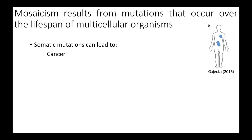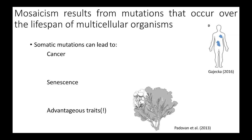We're most used to thinking about somatic mosaicism. Somatic mosaicism results from somatic mutations, which are mutations that occur in non-gamete producing cells. Somatic mutations can lead to phenomena such as cancer, senescence, and less often talked about, but really interestingly, can also lead to advantageous traits — such as in this eucalyptus tree, where a somatic mutation that arose in a single branch led to leaves that were chemically different from the non-mutant leaves, and therefore were able to resist predation by insects.